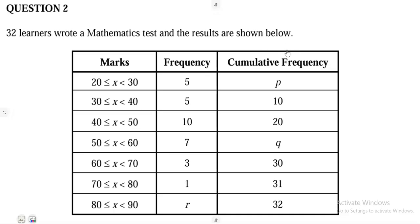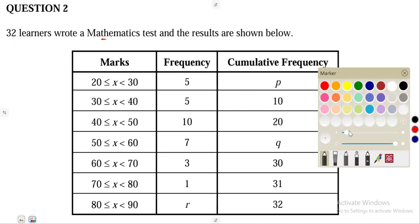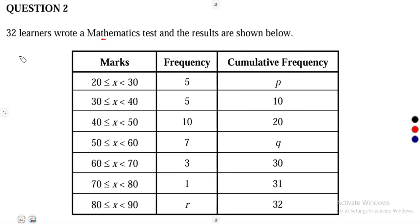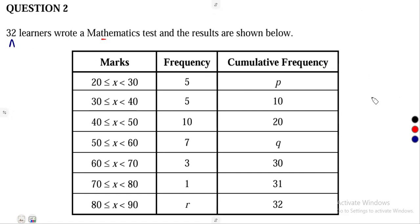In this case, we are given a question particularly on statistics with grouped information. That is 32 learners who wrote a mathematics test. So we're already given the number of learners — they are 32 — and considering our frequency, the total number of them is 32.